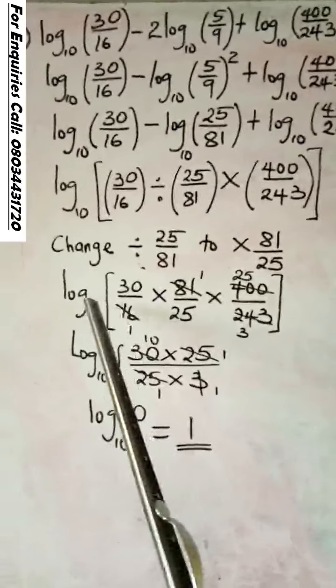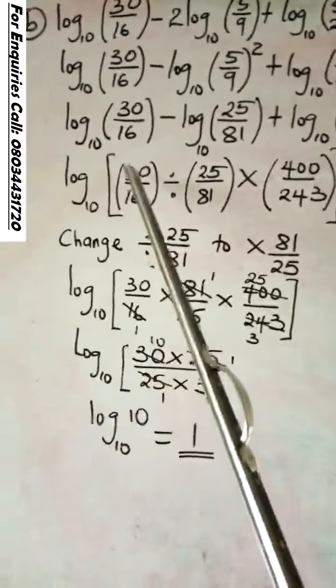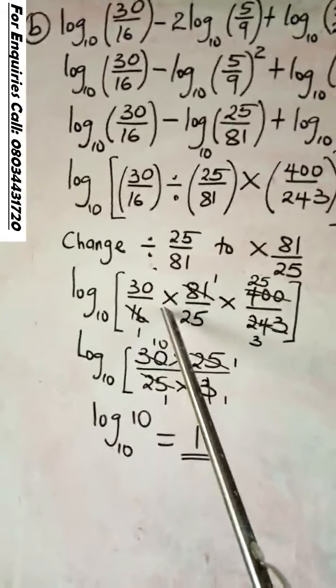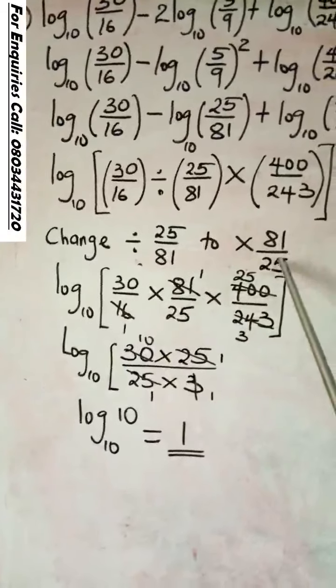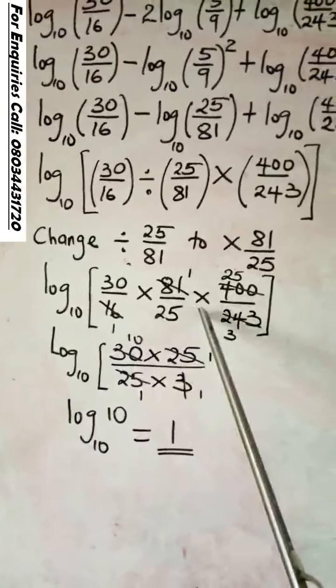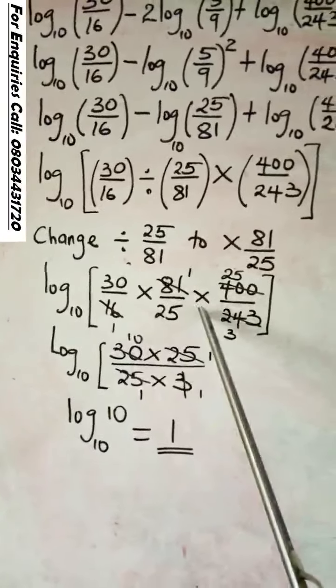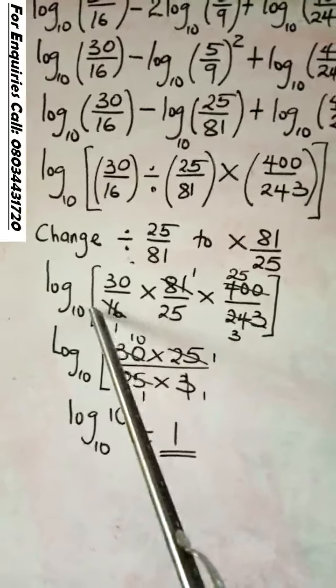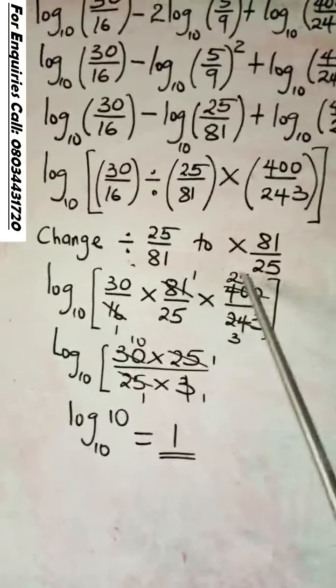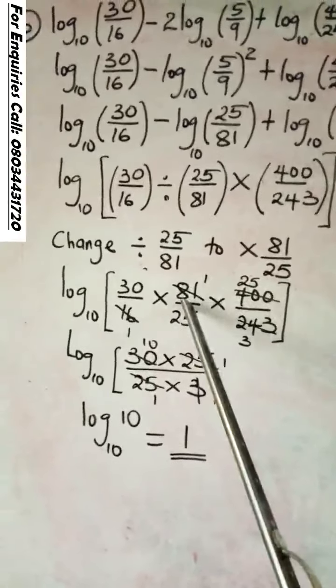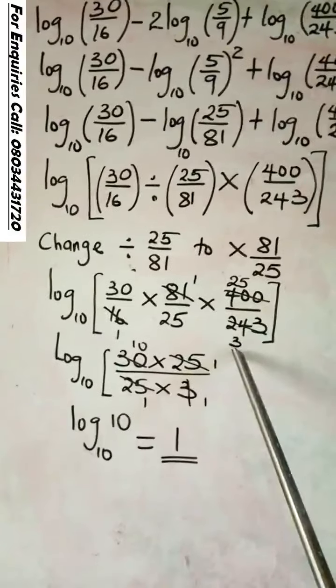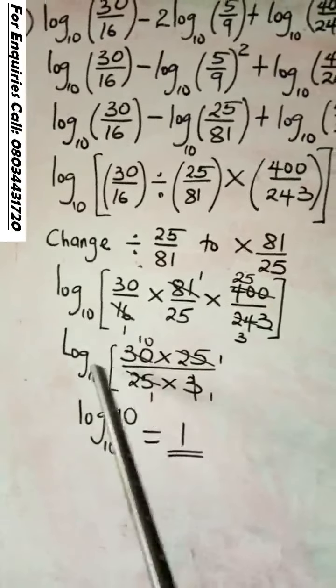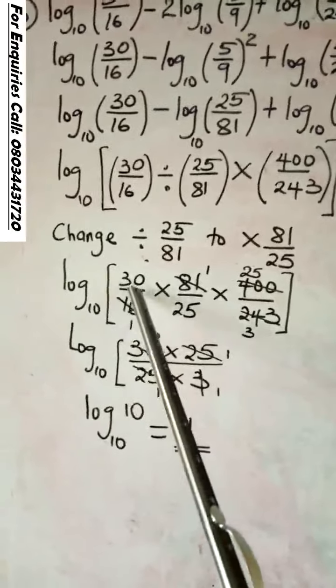So what you now have is log (30/16) × (81/25) × (400/243). 16 will go into 400 to give you 25. 81 will go into 243 to give you 3. So what you have now is log (30 × 25)/(25 × 3).